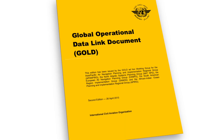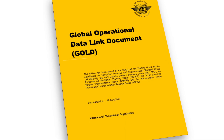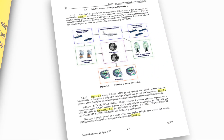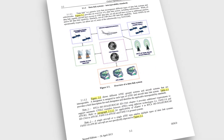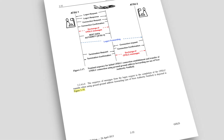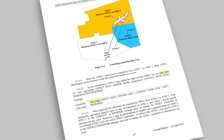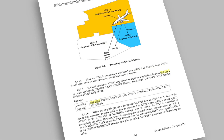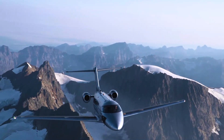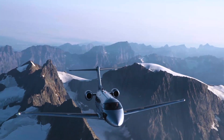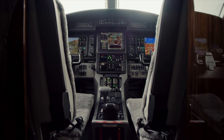For more information on CPDLC, refer to the Global Operational Datalink, or GOLD, document. The GOLD document can be found online and contains a great deal of information useful to flight crews, such as flight crew procedures, message formatting, and more. Watch Part 2 of this video series for information on how to log on and begin using FANS Datalink on the Pilatus ACE system.